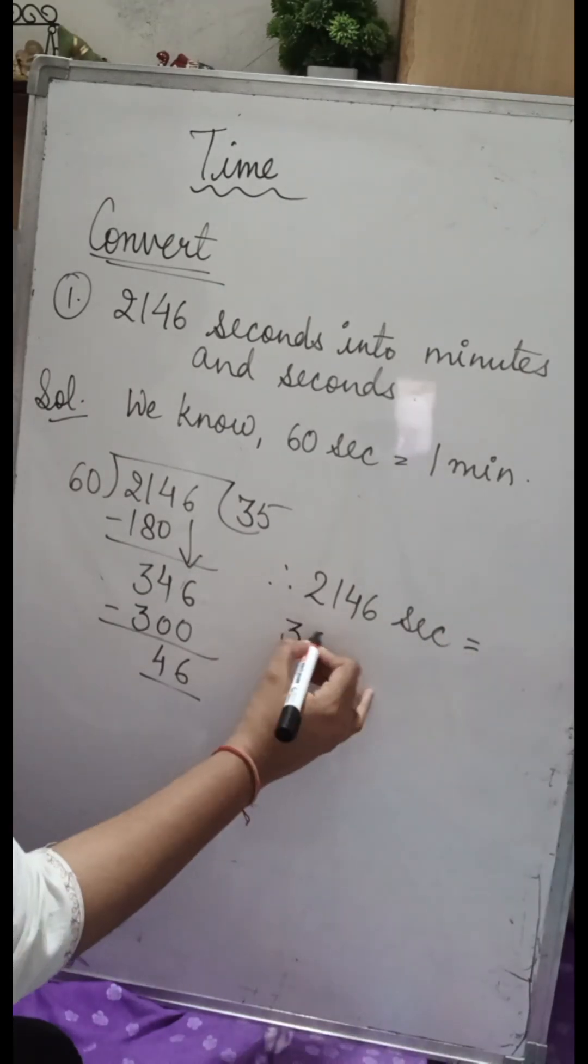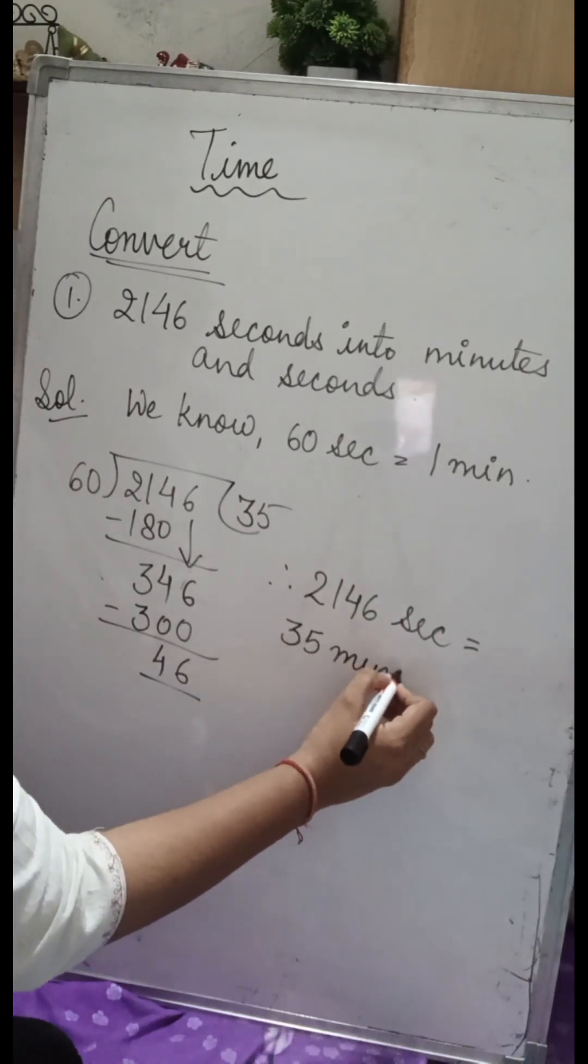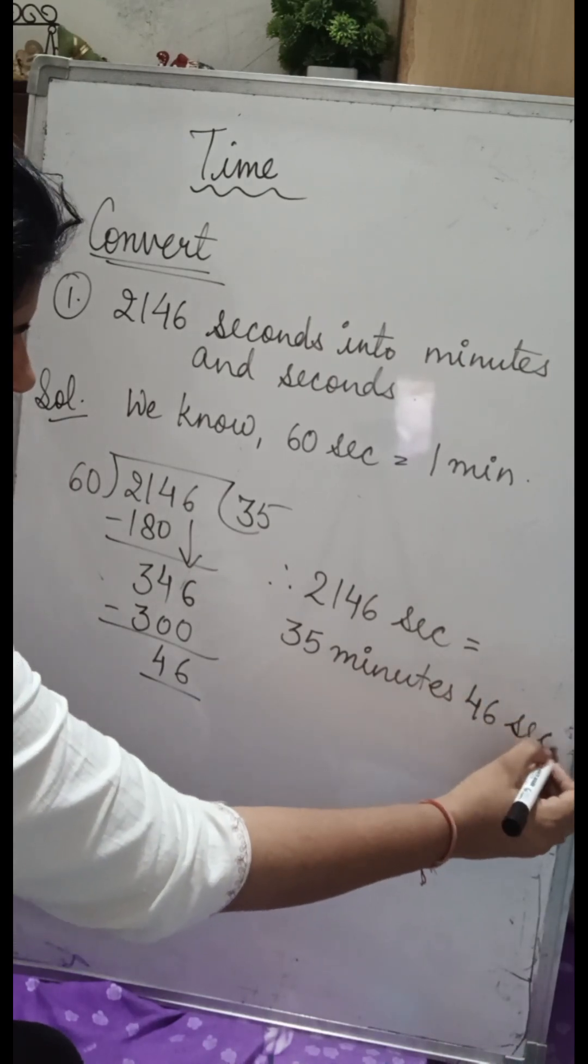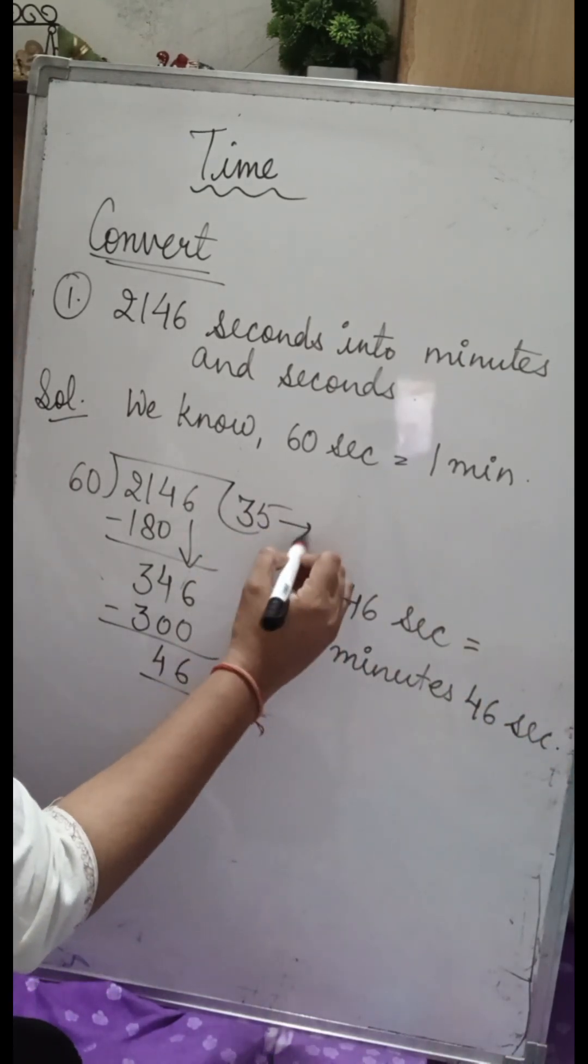Whatever answer you get as quotient is minutes, and whatever answer you get as remainder is seconds. So we get the answer: 35 minutes and 46 seconds.